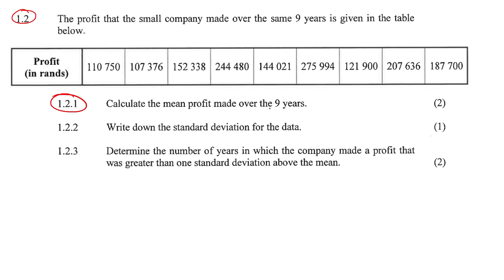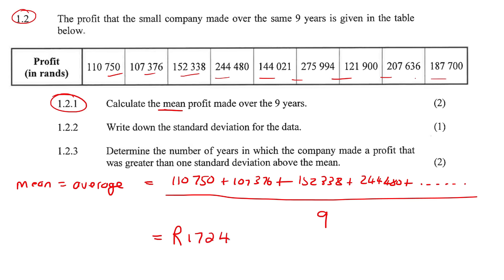Here it says, calculate the profit made over the nine years, the mean. Now, what is mean? Mean stands for average. You can do this on your calculator, but what I told learners is just go do it the normal way. So we're just going to add all of these numbers together. You understand what I'm doing, right? I'm going to add all of the numbers together and then I'm going to divide by how many numbers there are. There's 1, 2, 3, 4, 5, 6, 7, 8, 9 numbers. And if you had to go do all of that on your calculator, you should eventually end up with 172,466.11.